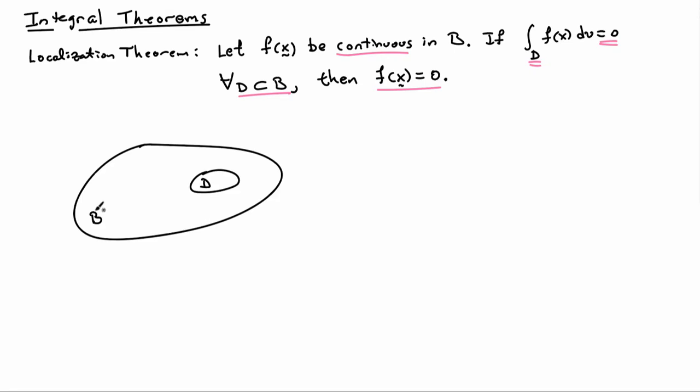And just sort of picture what we have is we have a body b and if I look at any subset of b and I do the integral of f over that subset and if I get zero, and then if I do the same operation again for another domain or subset d and I get zero, and if I keep doing that over all possible subsets of b and I always get zero, that means that the function is zero.